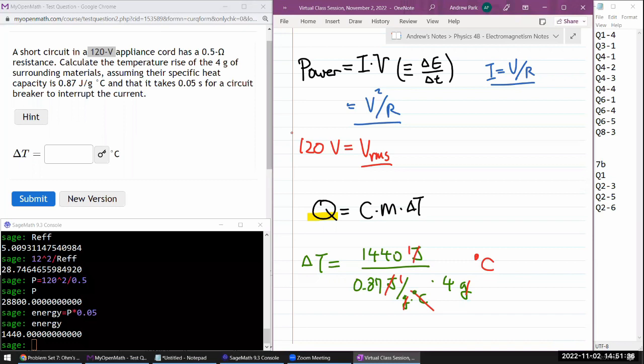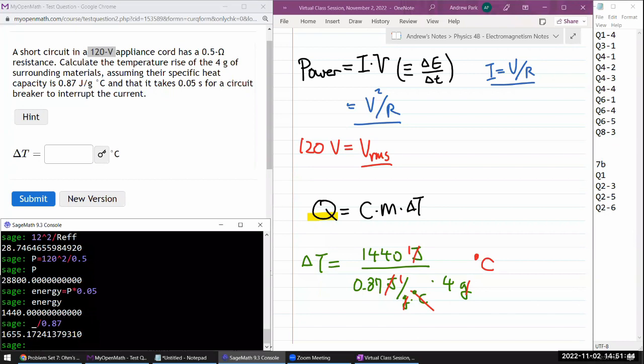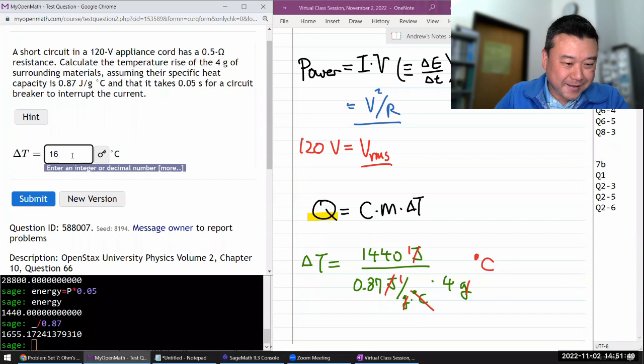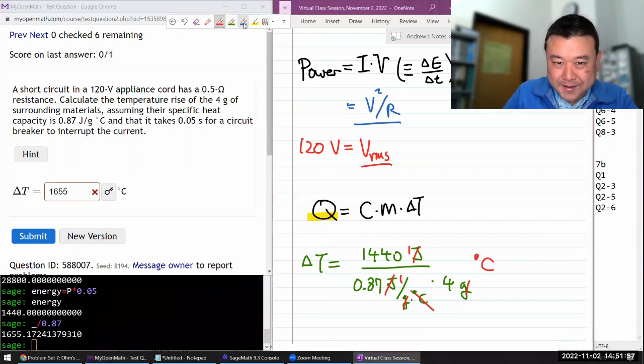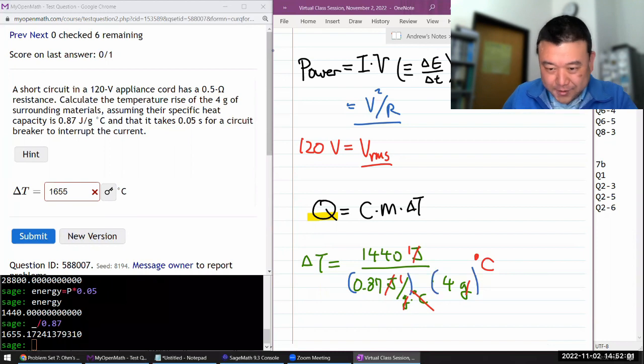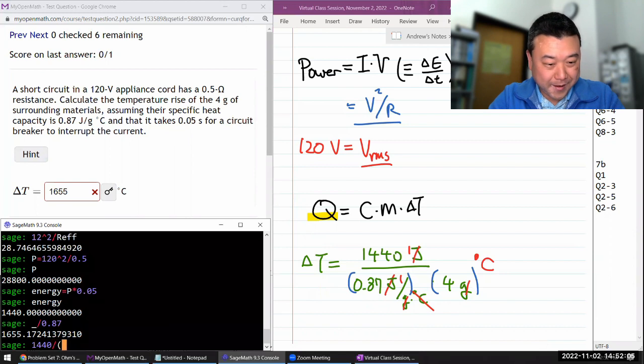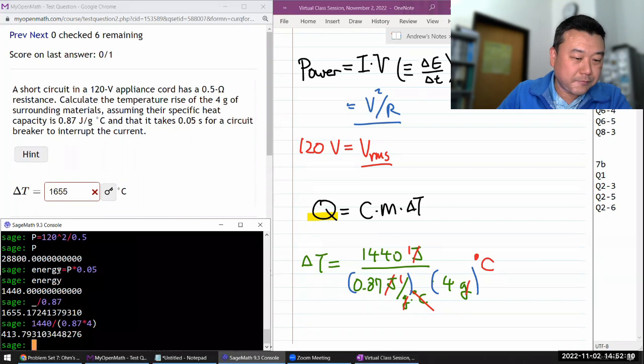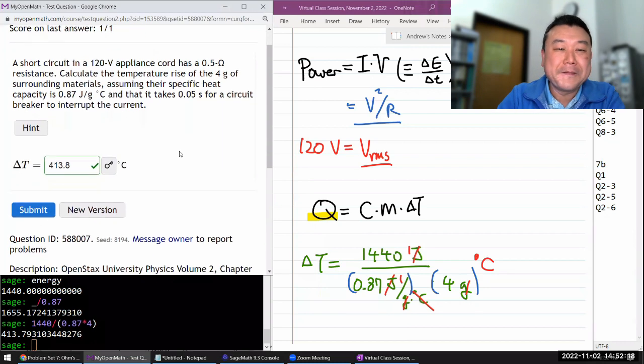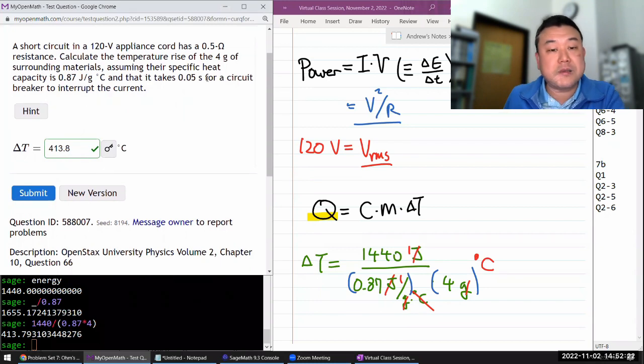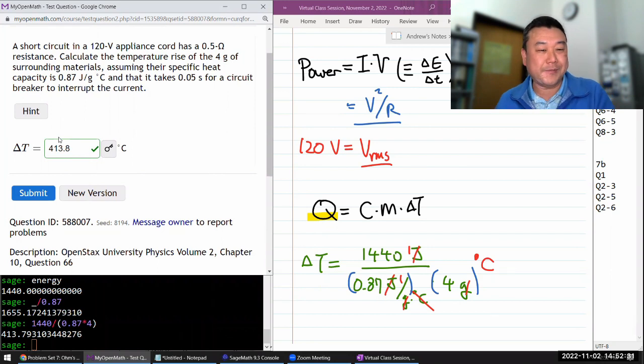So if I do 1440 divided by 0.87, that'll give me the answer in degrees C. I think this is a kind of a number sense question. What did I do wrong? I made a math mistake, which is I have to take this and multiply to that. So 1440 divided by 0.87 times 4, 413.8. And the point I was going to make still remains the same, which is the fire hazard of electrical failures. So even if the circuit breaker was able to kick in within 50 milliseconds, this is a temperature high enough to ignite certain things like paper. So if your surrounding is built out of flammable material, it could catch on fire. I think that's the main lesson there.